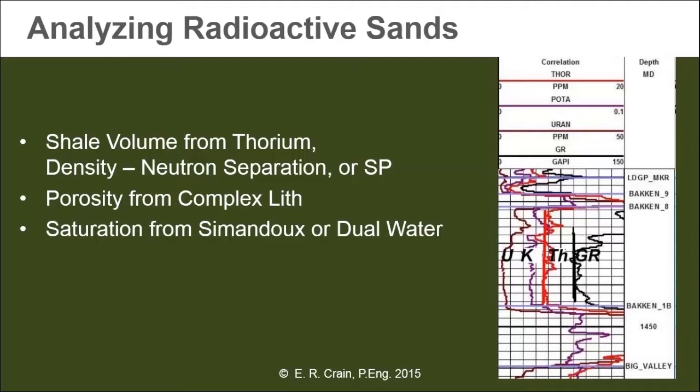However, there are places where none of these methods work very well, and that's when we have to use our imagination. In our first exercise, I'll show you how to handle the fact that the gamma ray, the thorium, and the potassium curves are not overly helpful in finding the shale volume, and the rock is a mixture of quartz and dolomite, so the density-neutron log is not very helpful either. It does take a little bit of skill and daring sometimes to get log analysis to work.